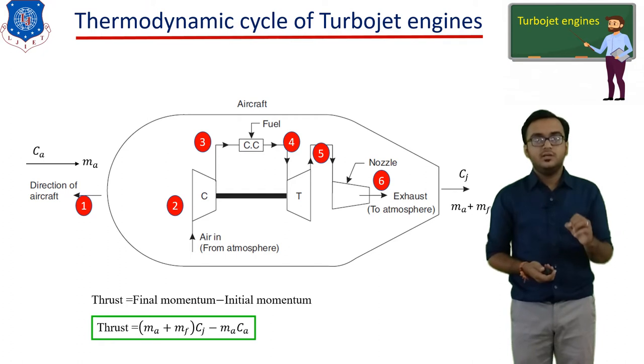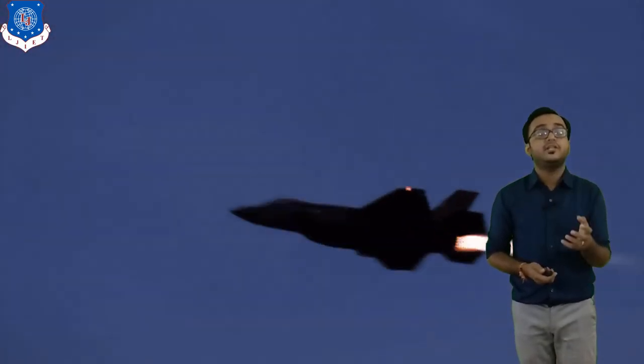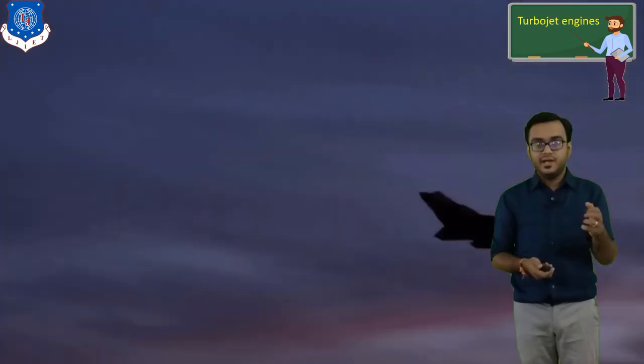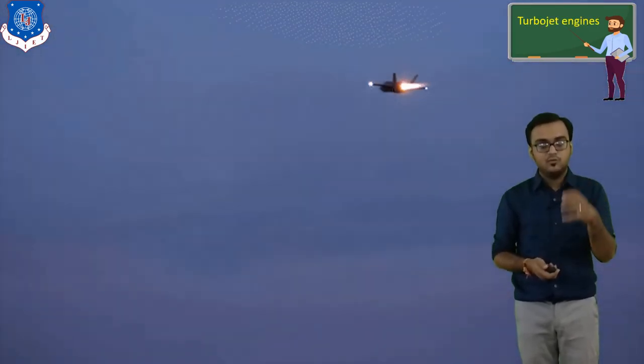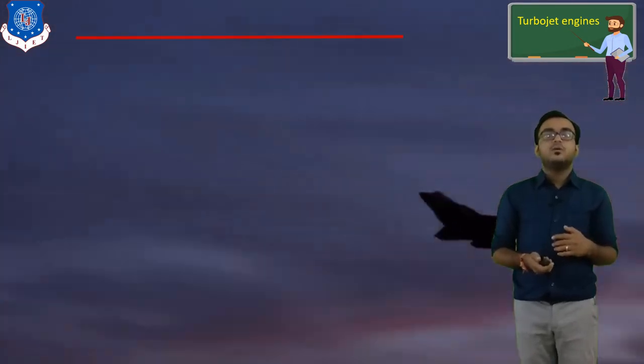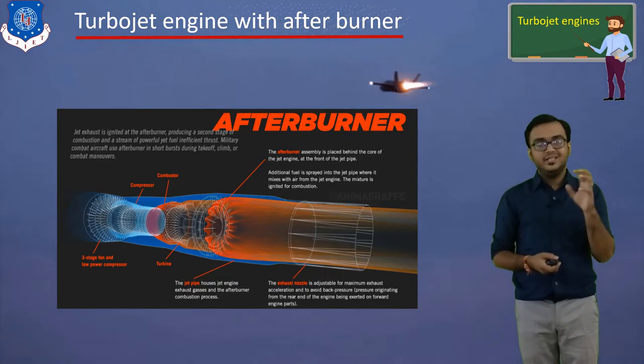In the turbojet engine with afterburner, we increase jet velocity to increase thrust. Since jet velocity is a function of temperature — and temperature is dependent on pressure as we are dealing with compressible fluid flow — increasing exhaust gas temperature increases thrust. Here you can see a jet engine with an afterburner equipped on a military plane moving with extreme thrust force.